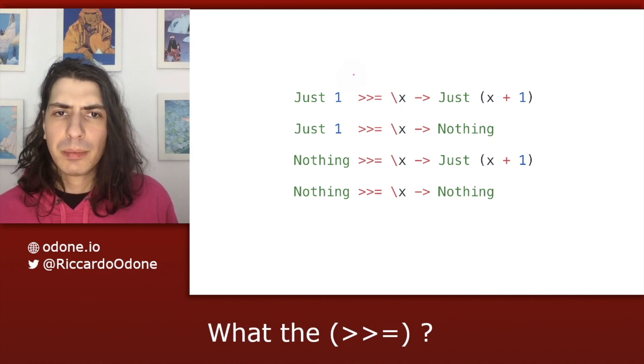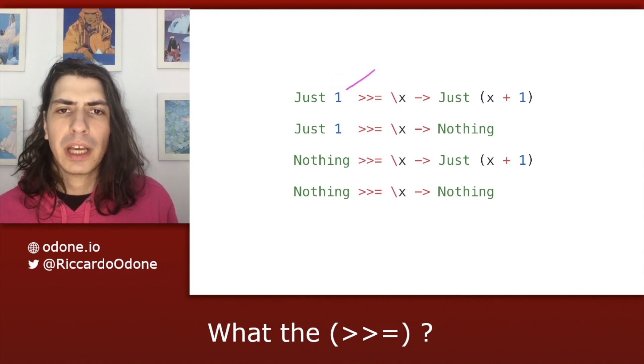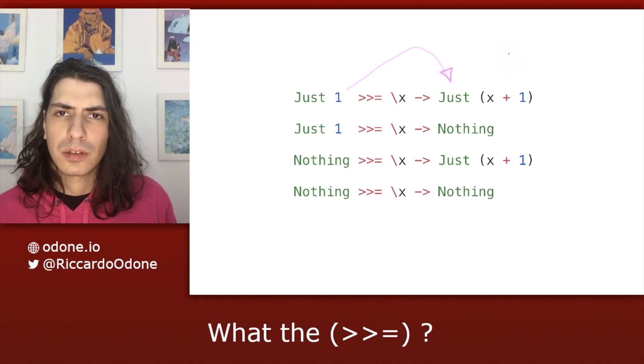So in the first line, for example, we have a Just 1, which means that we go on and we apply 1 to the step function and we get back Just of 2.